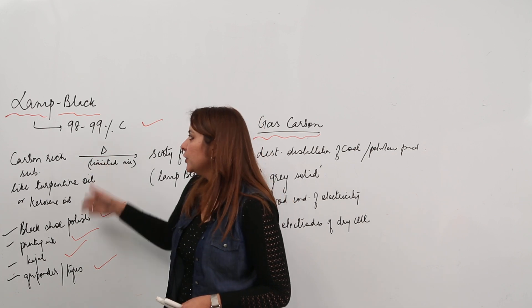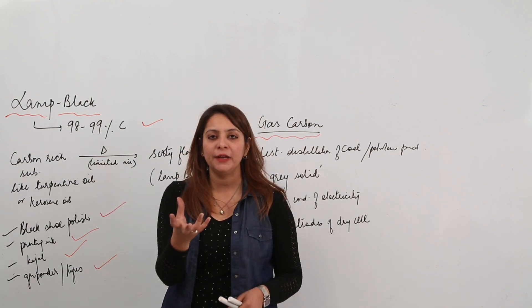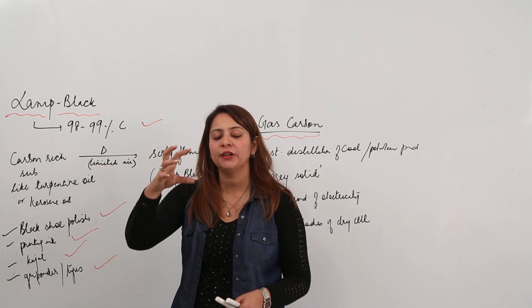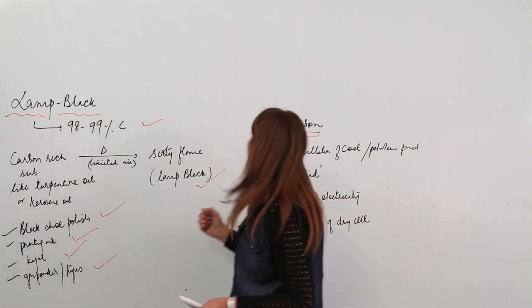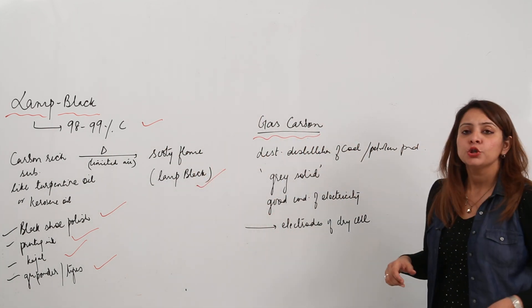So this is what lamp black is - just a black sooty flame which you collect in the form of powder. Next is gaseous carbon.